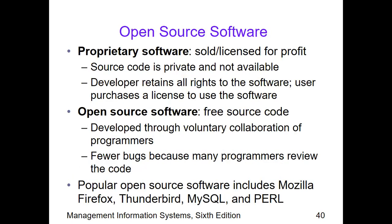Another topic is open source software, which is differentiated from proprietary software. Proprietary software is sold or licensed for profit — it is commercially available. The source code is private and not available. Copies from the masters can be sold. The developer retains all rights to the software, and the user purchases a license to use it — just the right to make use of that particular software, as with Microsoft Office. If we do not pay anymore, access will be removed.